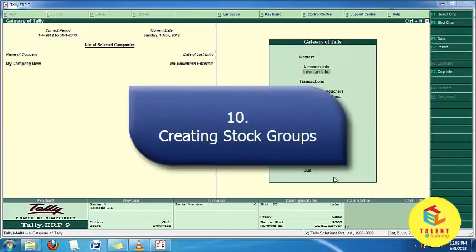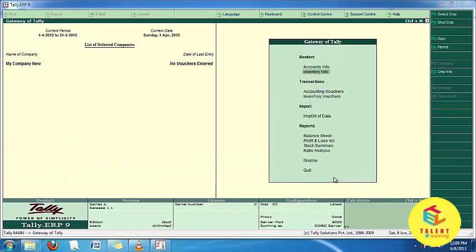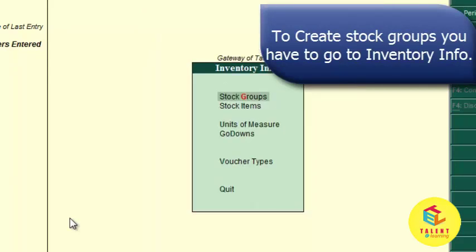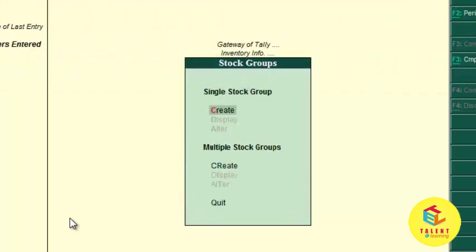Welcome friends. In this video tutorial we will learn how to create stock groups in inventory info. To create stock groups, first go to the Gateway of Tally and enter into the Inventory Info. After going to the Inventory Info, you have to select stock groups and create a single stock group.